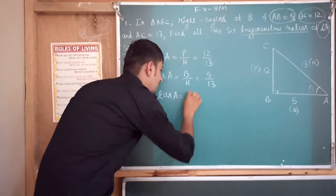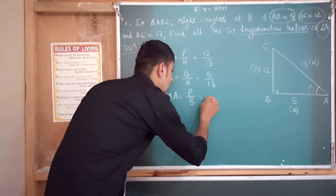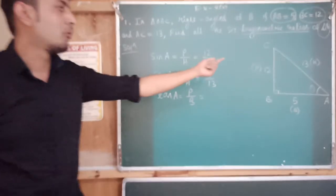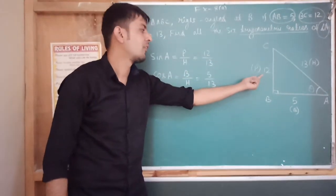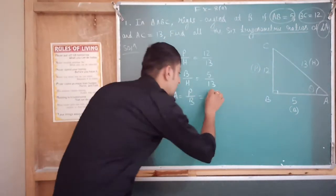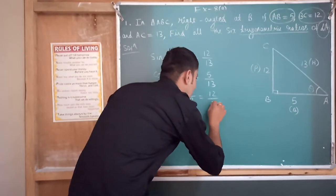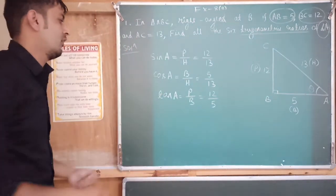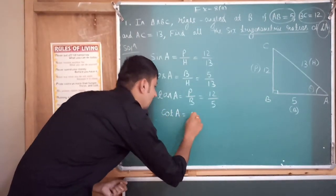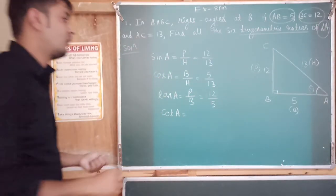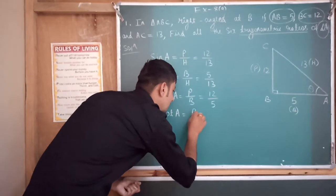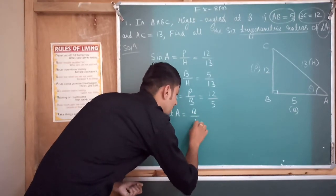Next, tan A equals perpendicular over base (P/B). The perpendicular is 12 and the base is 5, so tan A equals 12 over 5. Then cot A is the reciprocal of tan A, so cot A equals base over perpendicular (B/P), which gives us 5 over 12.